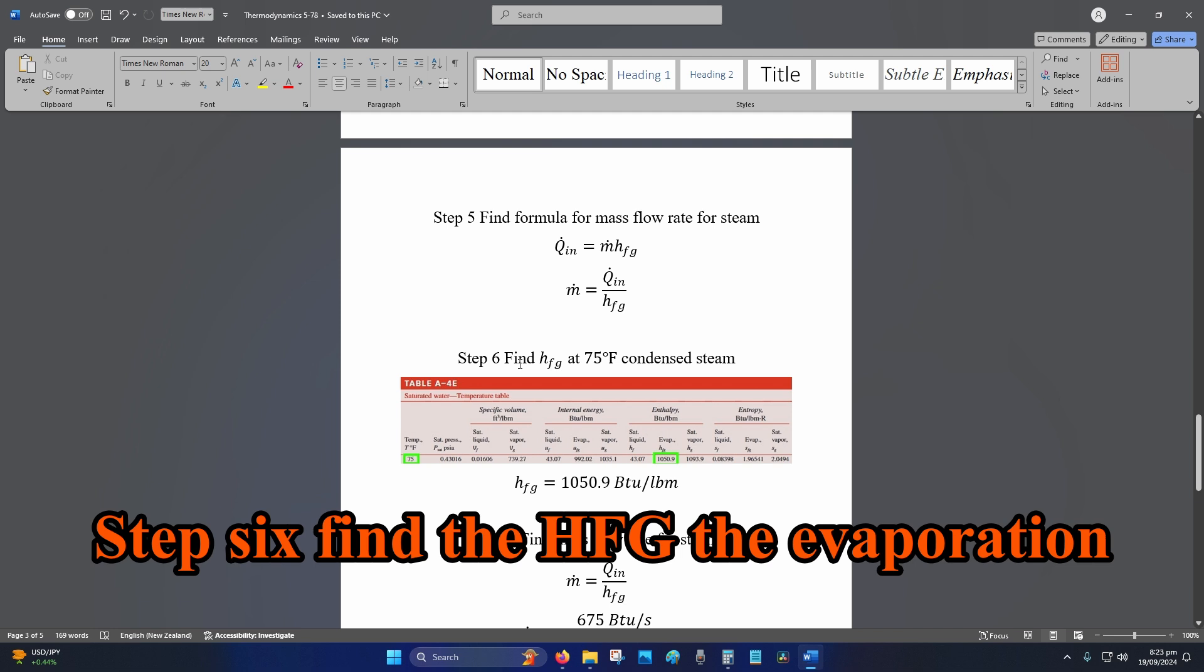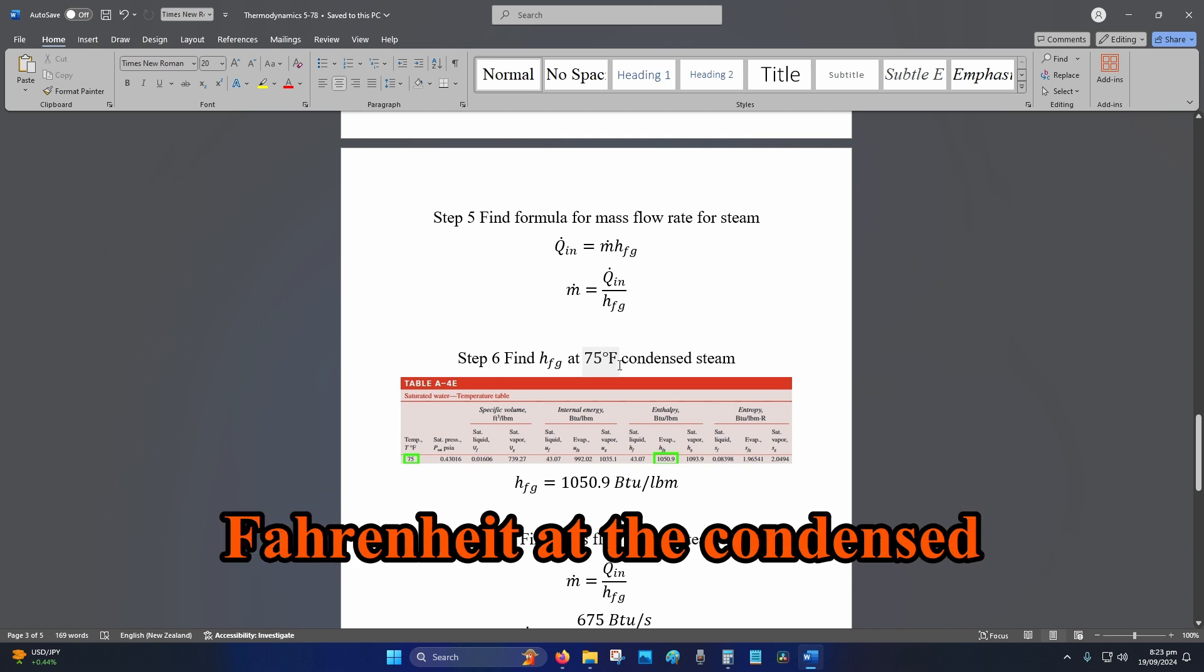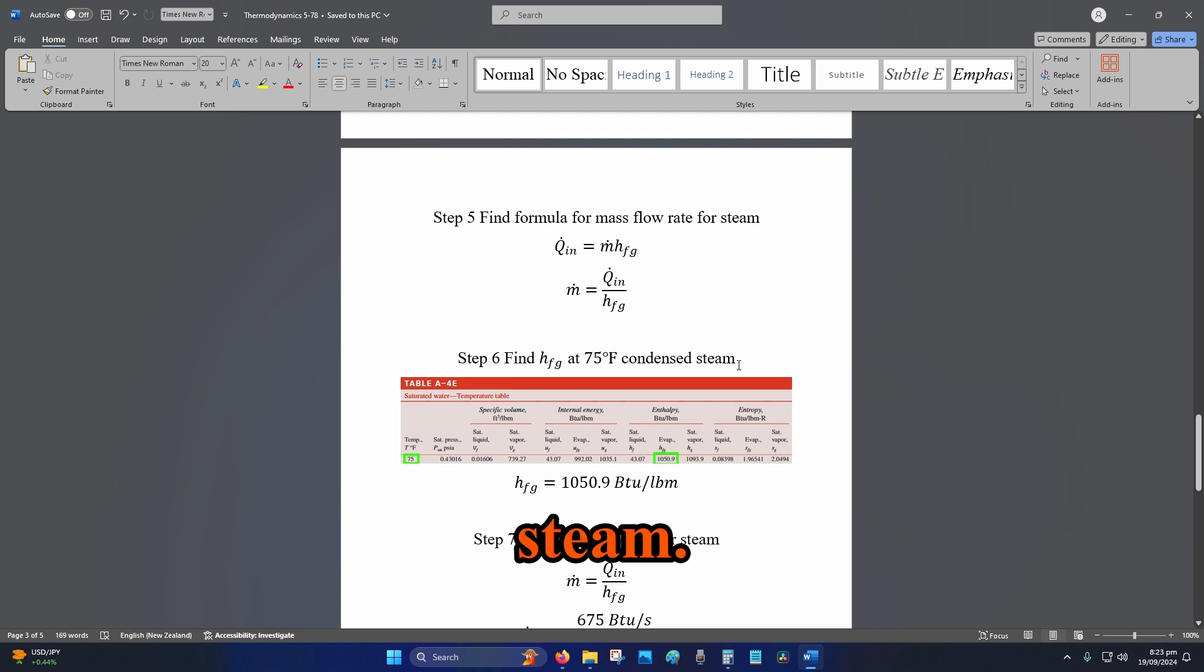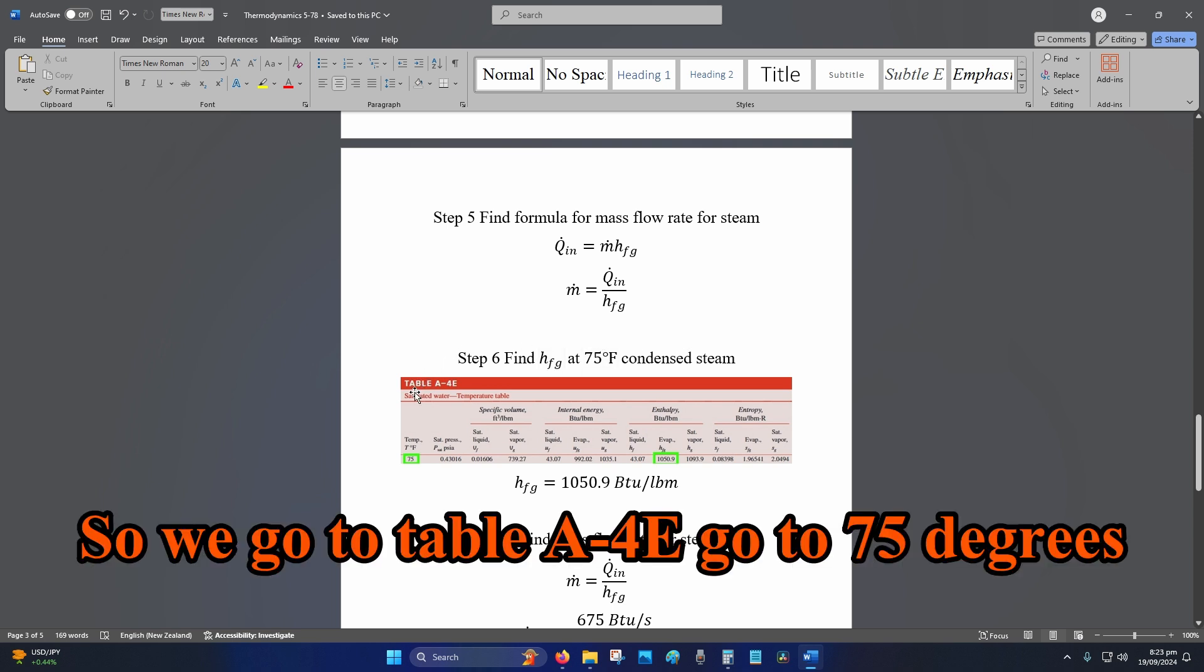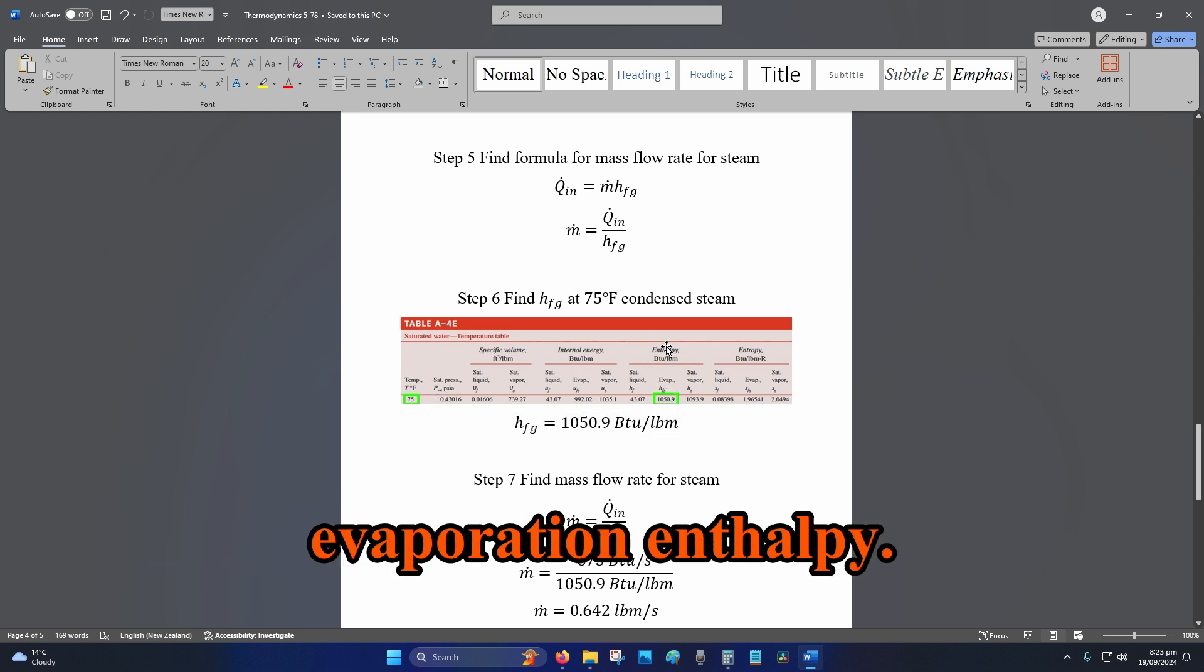Step six, find the HFG, the evaporation enthalpy at 75 degrees Fahrenheit at the condensed steam. So we go to table A-4E, go to 75 degrees Fahrenheit, and we go to HFG, the evaporation enthalpy.